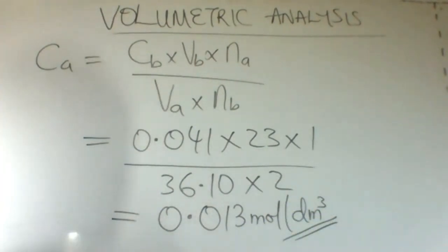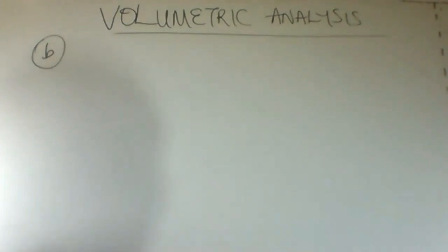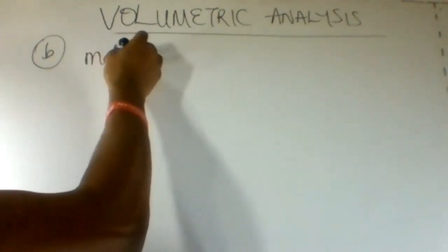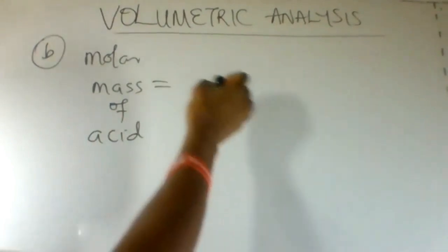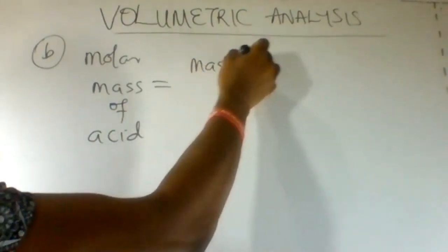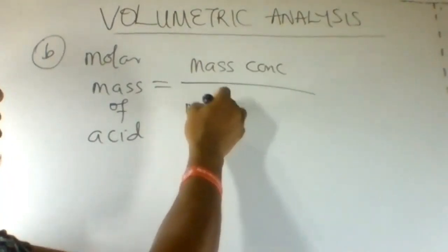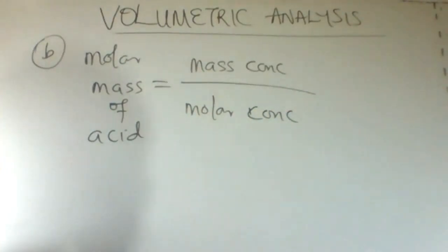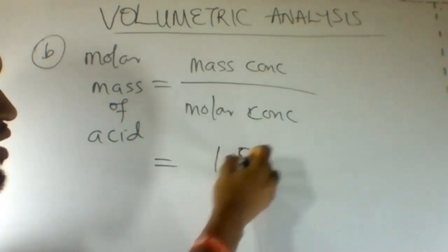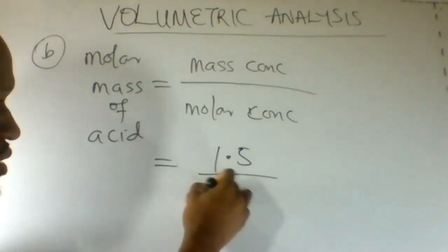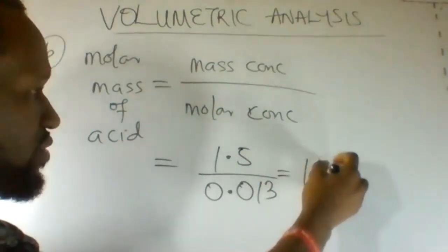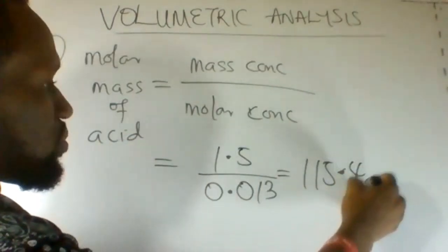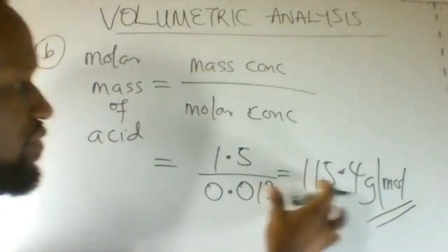To find the molar mass of the acid, we divide the mass concentration of the acid by the molar concentration of the acid. This gives us 1.5 divided by 0.013. Our answer is 115.4 grams per mole.